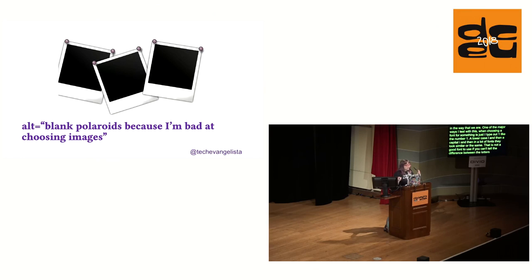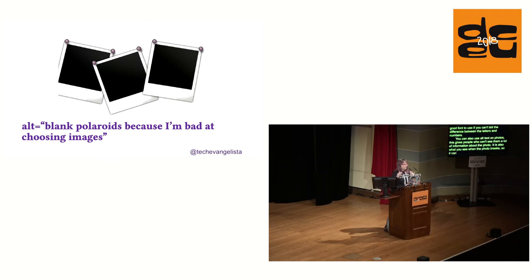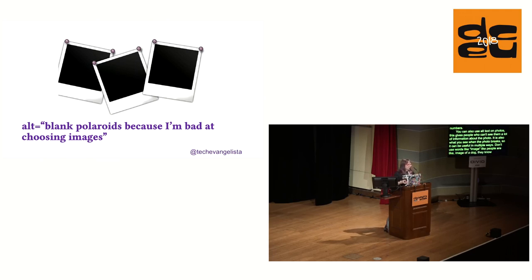You can also use alt text on photos. This gives people who can't see them a lot of information about a photo. It's also what you see when the photo breaks, so it can be useful in multiple ways. And don't use words like 'image' — people say 'image of a dog,' but they know it's an image. They've just heard 'image, image of a dog' on their screen reader.